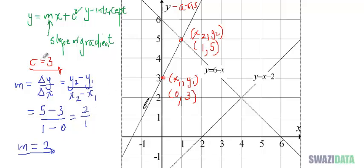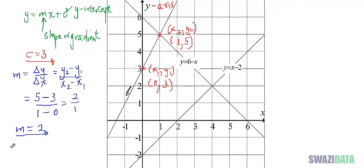Therefore, the equation is y equals 2x plus c, where c is 3, so y equals 2x plus 3. That's the equation of the line.